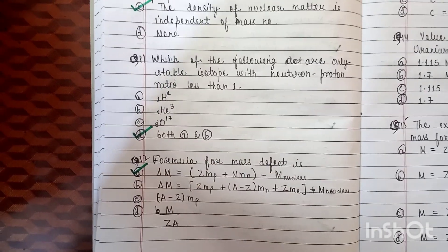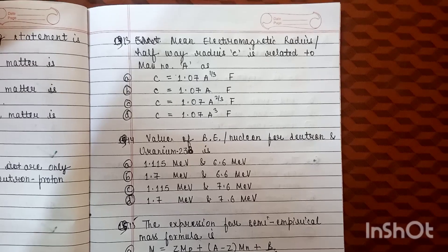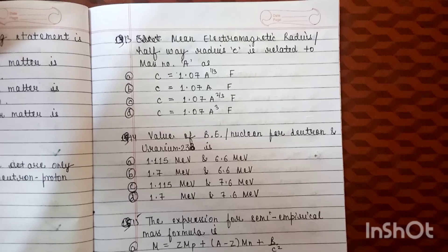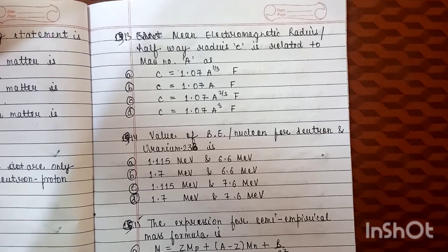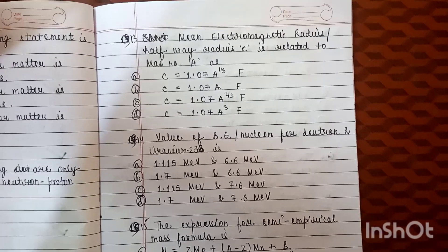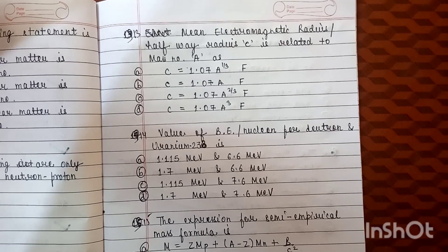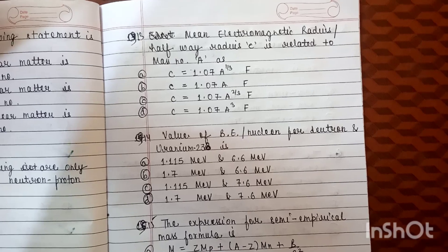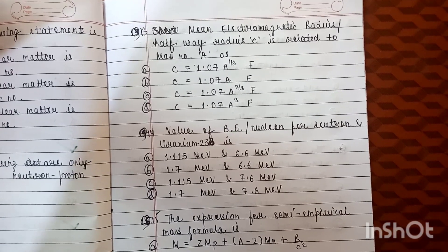Question number 13: the mean electromagnetic radius or halfway radius C is related to mass number A as — Option A: C = 1.07 A^(1/3) fermi. Option B: C = 1.07 A fermi. Option C: C = 1.07 A^(2/3) fermi. Option D: C = 1.07 A³ fermi.